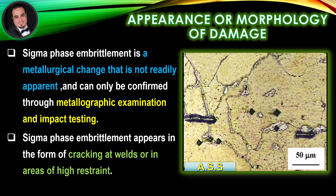Appearance or morphology of damage. Sigma phase embrittlement is a metallurgical change that is not readily apparent and can only be confirmed through metallographic examination and impact testing. As illustrated in the figure, the microstructure shows an austenitic matrix and a network of sigma phase precipitation on grain boundaries. Because sigma is a brittle phase, it often fractures during indentation. Sigma phase embrittlement appears in the form of cracking at welds or in areas of high restraint.